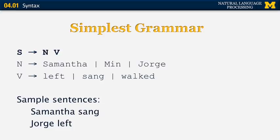This is our simplest grammar. S transforms into NV. N is either Samantha, Min, or Jorge. V is either left, sang, or walked. We can produce sentences like Samantha sang, Jorge left, or Jorge sang. Obviously this grammar is very simple — it only generates two-word sentences, so we need to expand it.